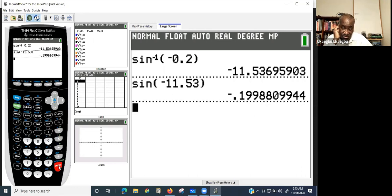And then, that's your result. Your result is negative 0.19 or negative 0.2. That's your result.